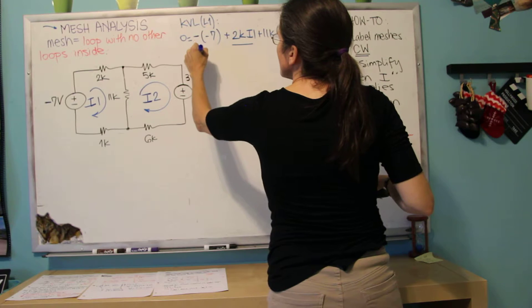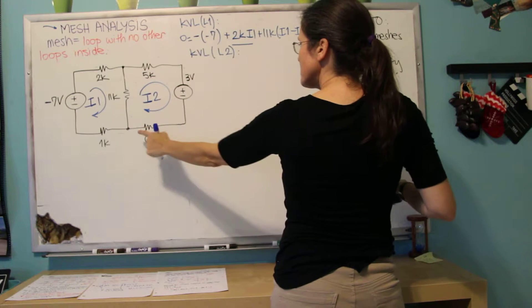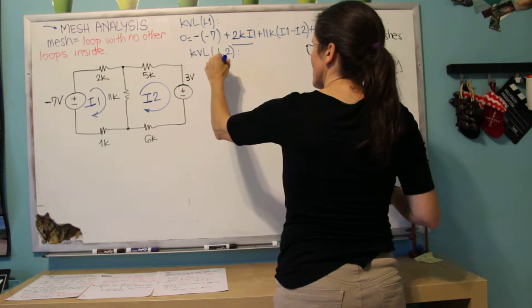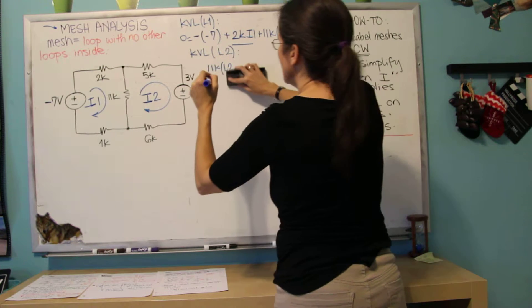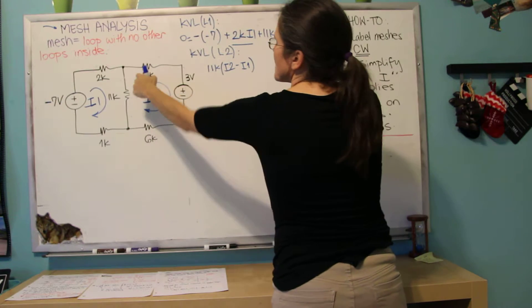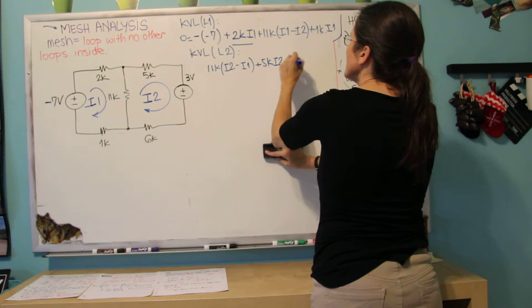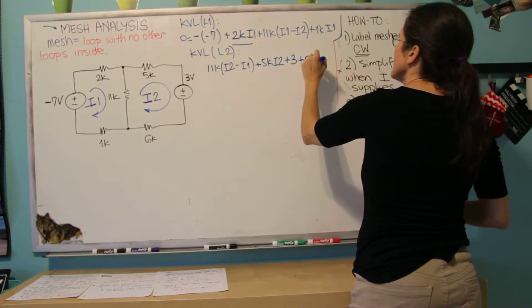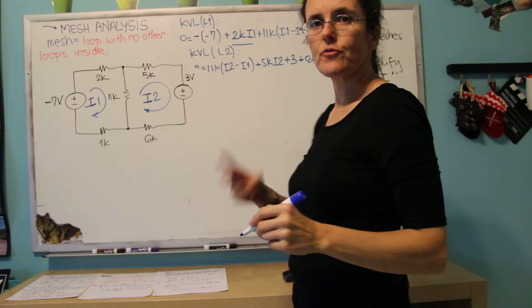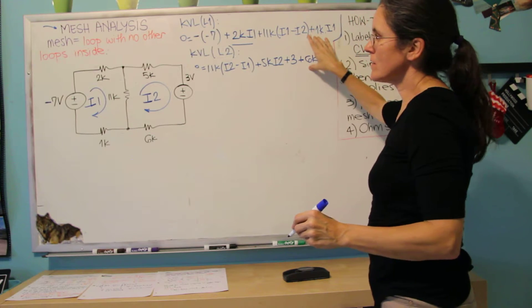And now I'm going to do KVL, a little bit smaller, for L2 for the second loop. I will start here, and now the 11K, I want to be I2-centric. So the first term is going to be 11K times I2 minus I1 plus 5K I2 plus 3V plus 6K I2, all this equals 0. So now I have two equations and two variables, I1 and I2, and I can simply solve the 2.